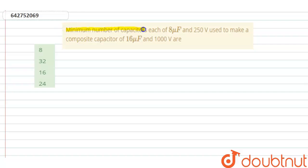number of capacitors, each of 8 microfarad and 250 volt, used to make a composite capacitor of 16 microfarad and 1000 volt.